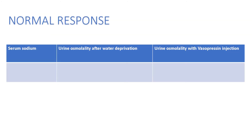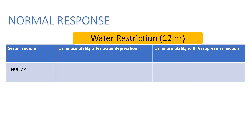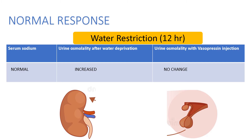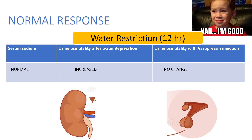So the normal response: at baseline, serum sodium is normal. After 12 hours of water restriction, urine osmolality increases — indicating the kidney is responding well to enough ADH. Urine osmolality with exogenous vasopressin injection should not change, because you have already reached maximum concentration with your endogenous ADH. This means the pituitary is intact — it's as if you're saying, I'm good, I don't need any exogenous ADH.